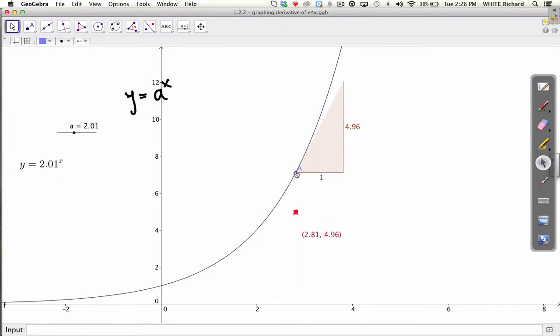So if we move this point, you can see it's graphing the derivative at every single value. See the same x value, and 3.28, then this red point's y value is 3.28.